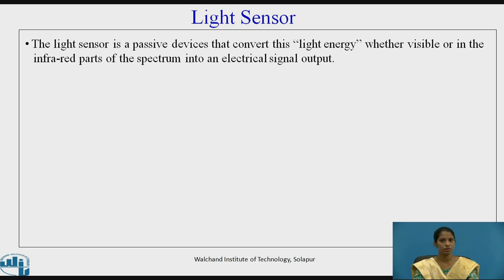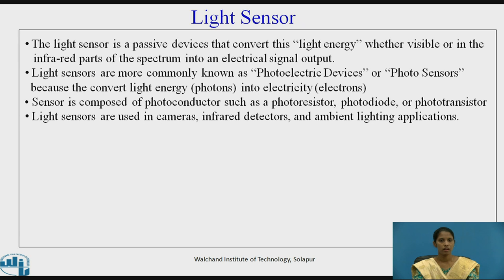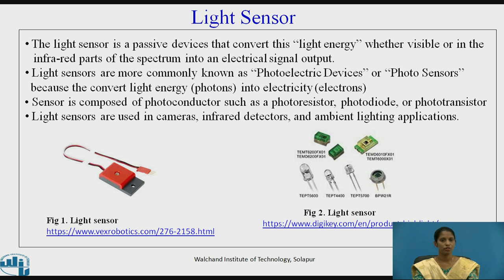The light sensor is a passive device that converts light energy — whether visible or in the infrared part of the spectrum — into an electrical signal output. Light sensors are commonly known as photoelectric devices or photosensors because they convert light energy into electricity. They are composed of a photoconductor such as a photoresistor, photodiode, or phototransistor, and are used in cameras, infrared detectors, and ambient lighting appliances. Figures 1 and 2 show light sensors used for various applications.